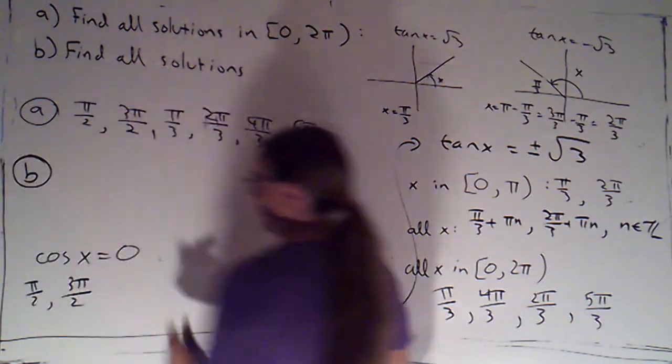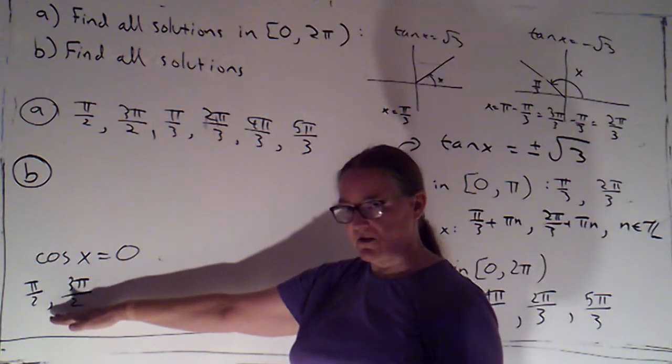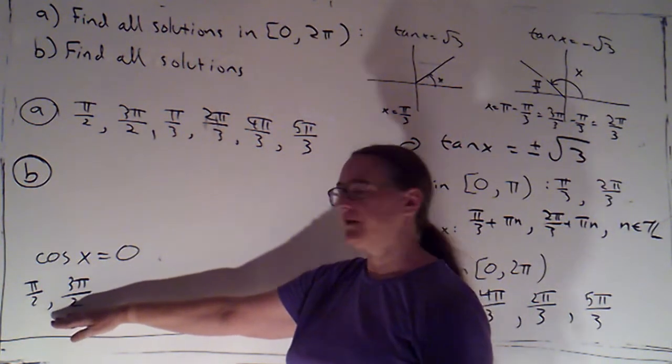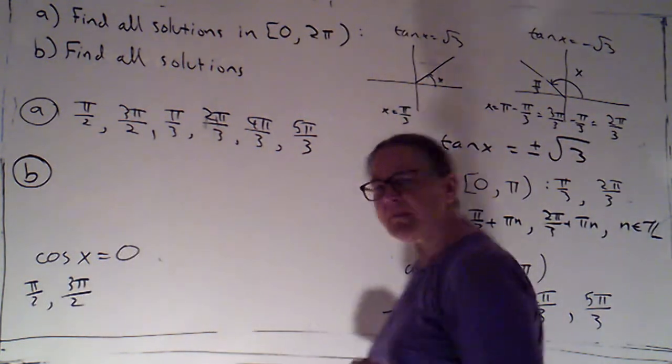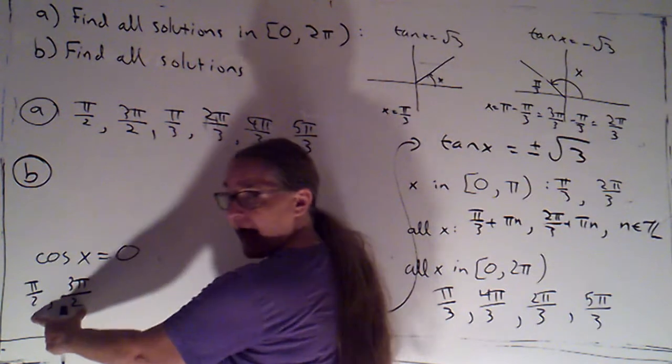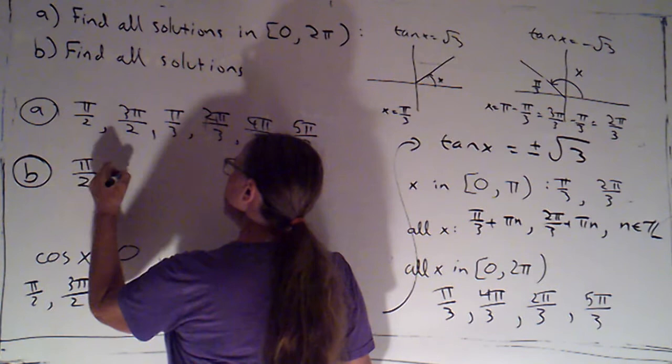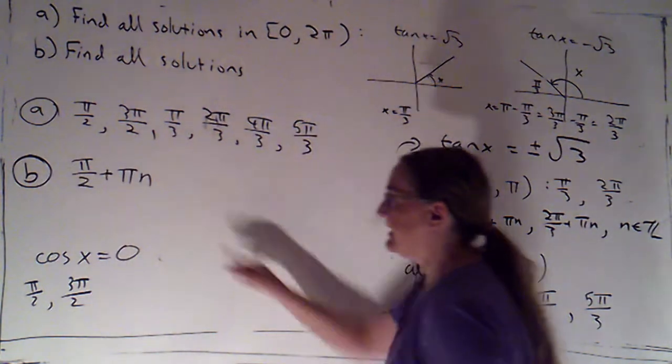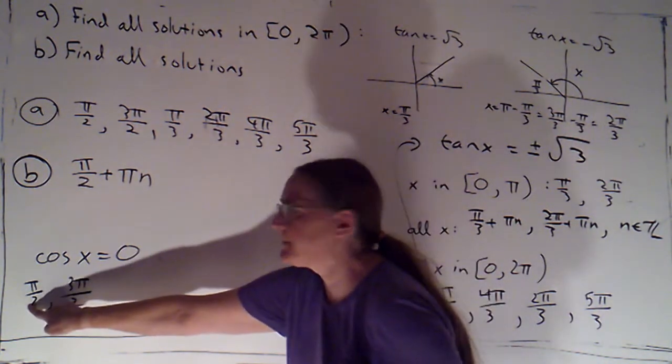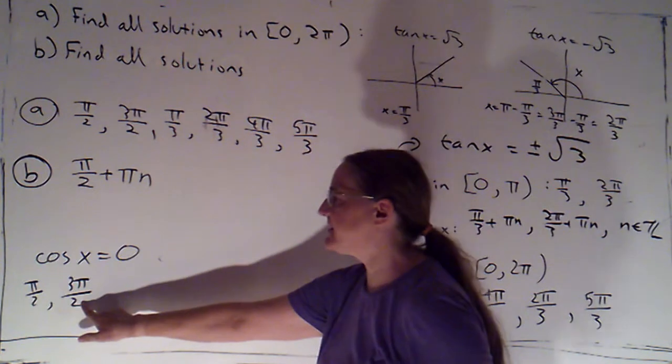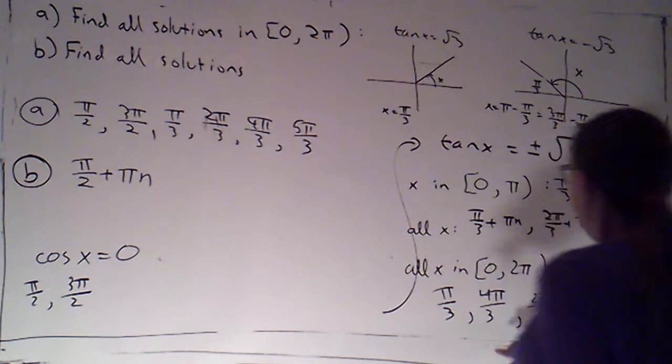For all solutions, need to be careful. Here, these were solutions to cosine. So, everything coterminal with one of these is going to work. So, I could add 2 pi n to these. Or, we observed earlier that these were actually pi apart. So, if I want to, I can consolidate and just say this is pi over 2 plus pi times n. That way, if n is 1, that gives me this solution. If n is even, I'll get something coterminal with pi over 2. And if n is odd, I'll get something coterminal with 3 pi over 2.